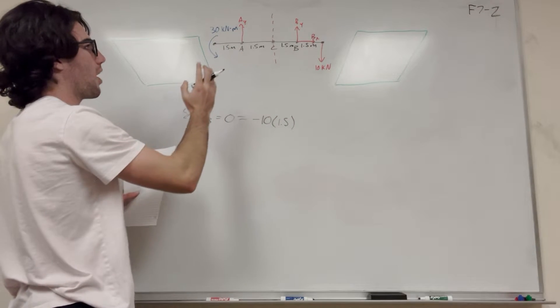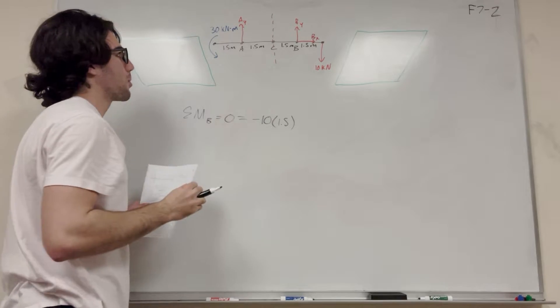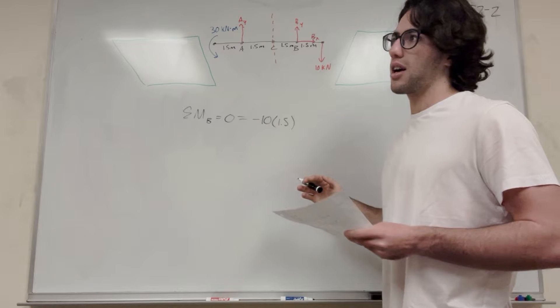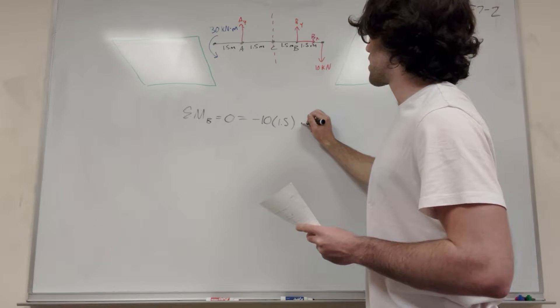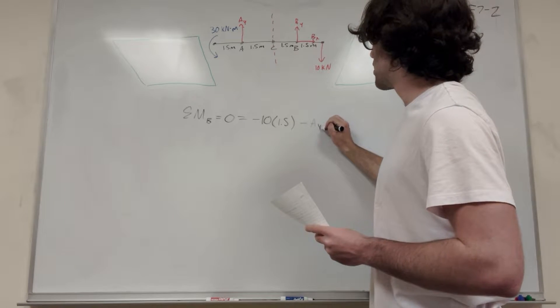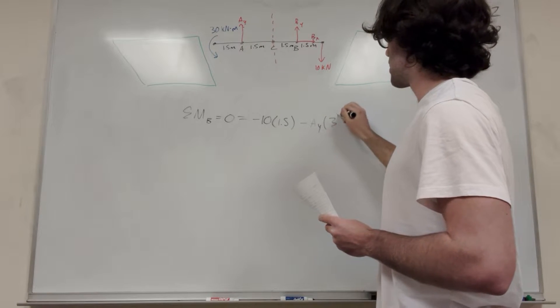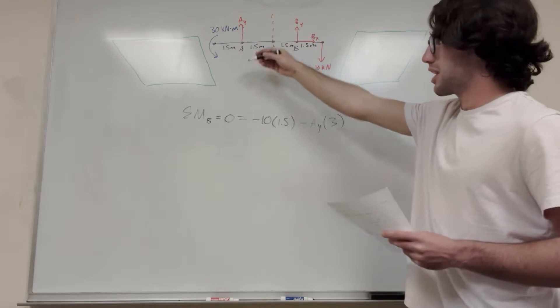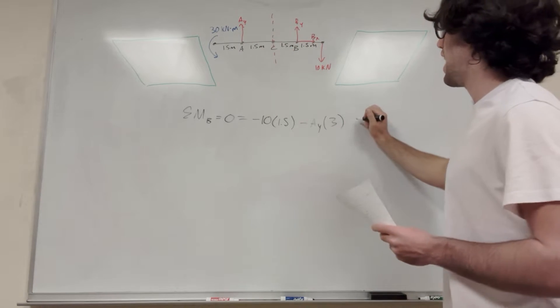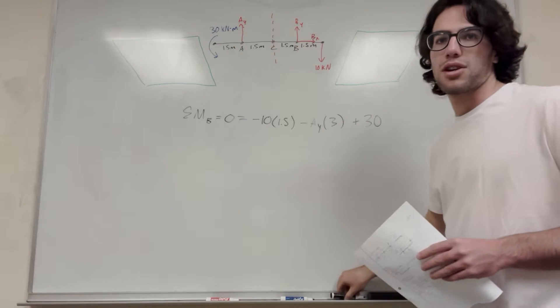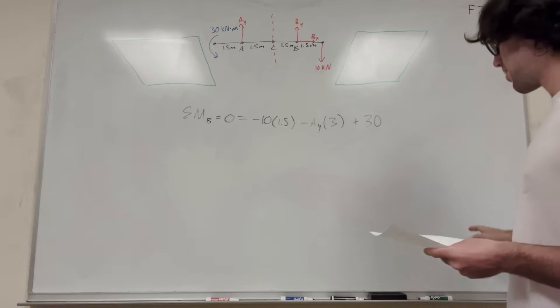Okay, then we have A_Y. So A_Y is also pushing upward. It's going to make this one rotate clockwise, which is going to be a negative number again. So it's going to be minus A_Y. And then its distance is now 1.5 plus 1.5, which is 3 meters. Then we have this 30 kilonewton force going counterclockwise, so we're going to add that. So plus 30.